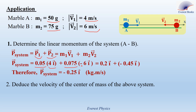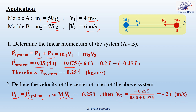Part 2: Deduce the velocity of the center of mass of the system. Using the formula, the linear momentum of the center of mass equals the linear momentum of the system, so M·V_G equals P_system. The total mass M equals M1 plus M2. Therefore V_G equals −0.25i divided by the total mass, giving V_G equals −2i meters per second.